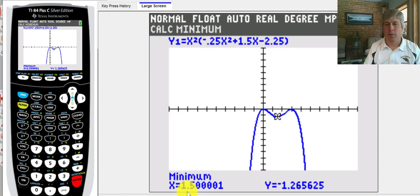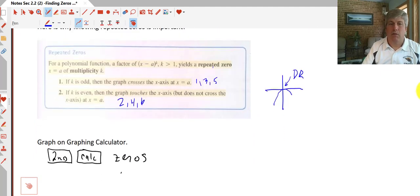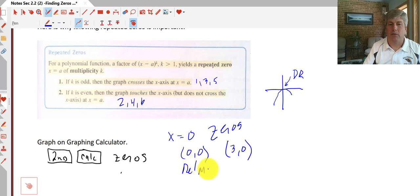And we get a minimum x is one and a half, 1.5. And our y is negative 1.27. We can call it for rounding purposes. Going back to our function. The zeros again were at x equals zero or the origin and x is (3, 0). So those are our zeros. This was also a relative max. And this one was a relative max.